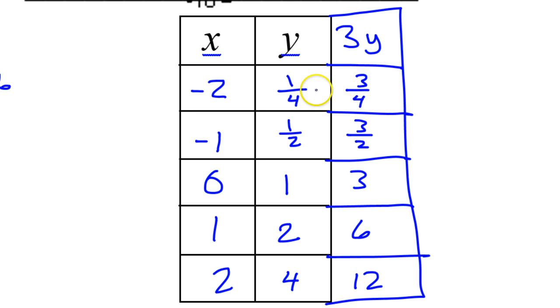Just to be clear, 3 times 1 fourth, for example, you can just think of this as 3 over 1 times 1 over 4. I'm just multiplying straight across. 3 times 1 is 3, 1 times 4 is 4. That's where I'm getting 3 fourths from. Now that we have a new y column, we can disregard the old y column. So these are the x's and y's that I will be plotting.